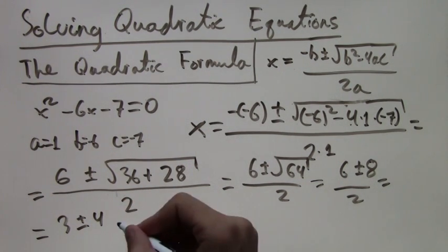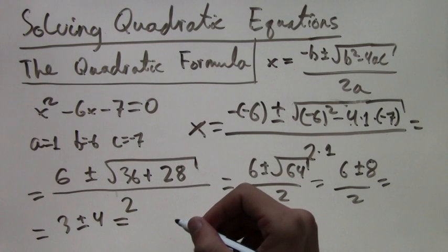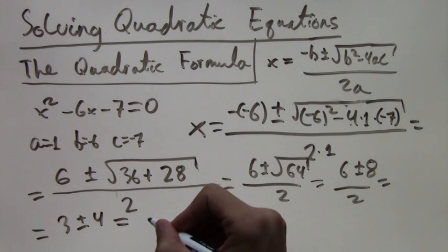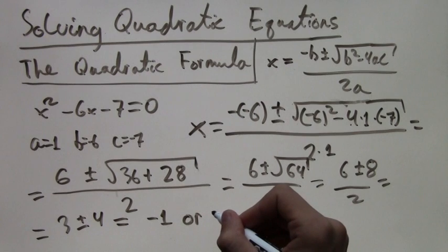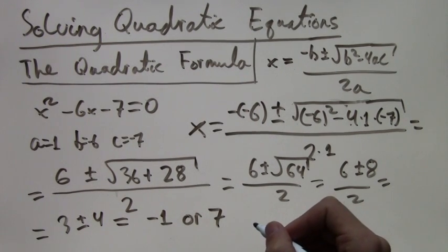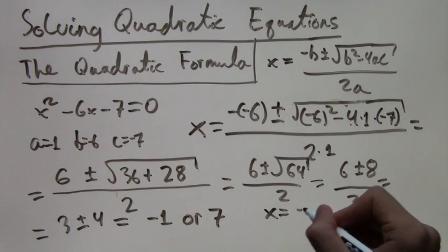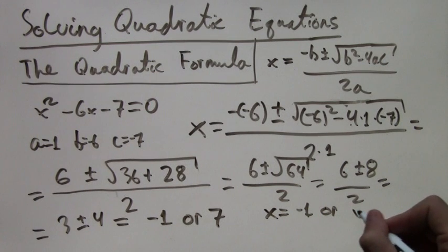Which is the same as just two different values which are negative 1 or 7. So we have these two solutions: x equals negative 1 or x equals 7.